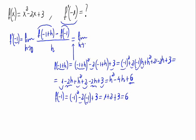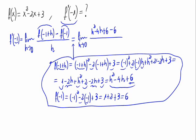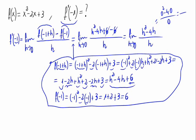Now let's substitute into the limit. The numerator becomes h squared minus 4h plus 6 minus 6, divided by h. When substituting h by 0, we get 0 squared minus 4 times 0, divided by 0, which gives 0 divided by 0. We have an indetermination.